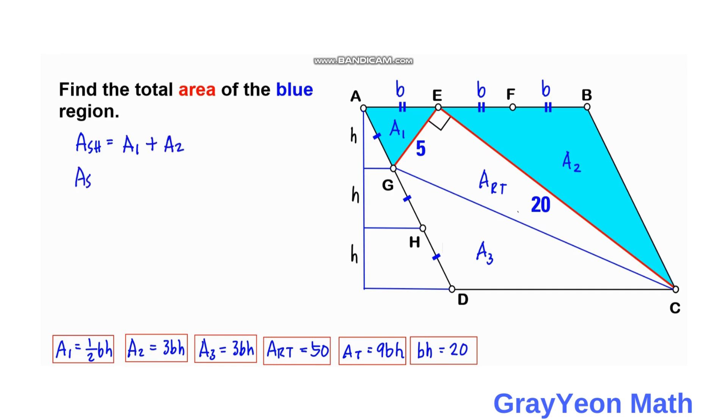And area SH, since area 1 is actually 1 half bh. And area 2 is 3bh.